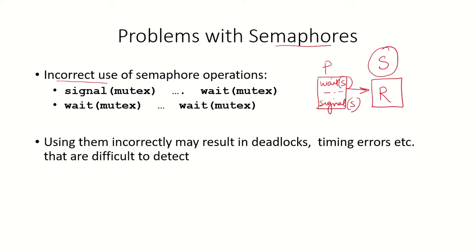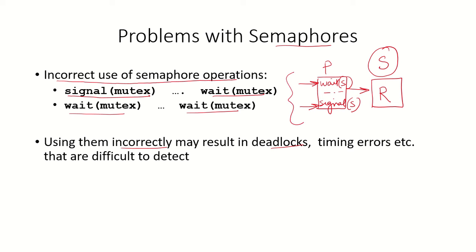However, an incorrect use of semaphore operations can cause problems. Like instead of first doing the wait operation and then the signal operation, if we first write signal and then write wait, or what would happen if we write wait on both places instead of signaling it. This incorrect use of semaphores may result in deadlocks and timing errors, and these might be difficult to detect by a programmer.